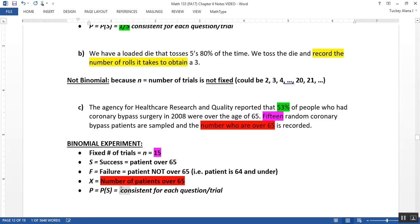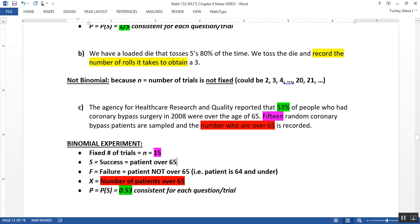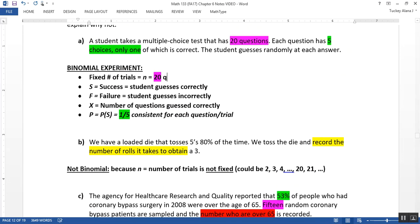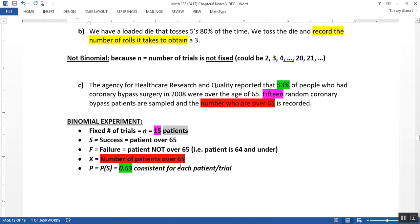The probability of success is 0.53, right? Because it's 0.53 for the population at large, therefore it is for this group, right? The population being all coronary bypass patients in 2008. And that's consistent for every patient, right, not question, but patient, and the patients are our trials. So there are 15 patients. And actually, I guess that I could put that up here. For this one, it was questions. So the trials are questions, and this one, the trials are patients. So we have all four categories satisfied. This is a binomial experiment.